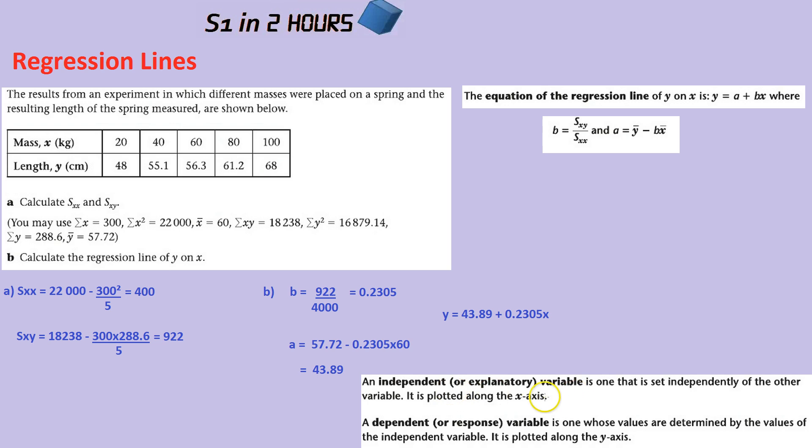The independent variable goes along the x-axis and it's usually things like time, so that's the cause of things to happen. So over time your height might go up or over time the plant might grow taller. The dependent variable is the effect that this has, that's plotted on the y-axis, and that might be the length of the plant, for example. That doesn't cause time to change, it's time on the x which causes the length to change on the y.